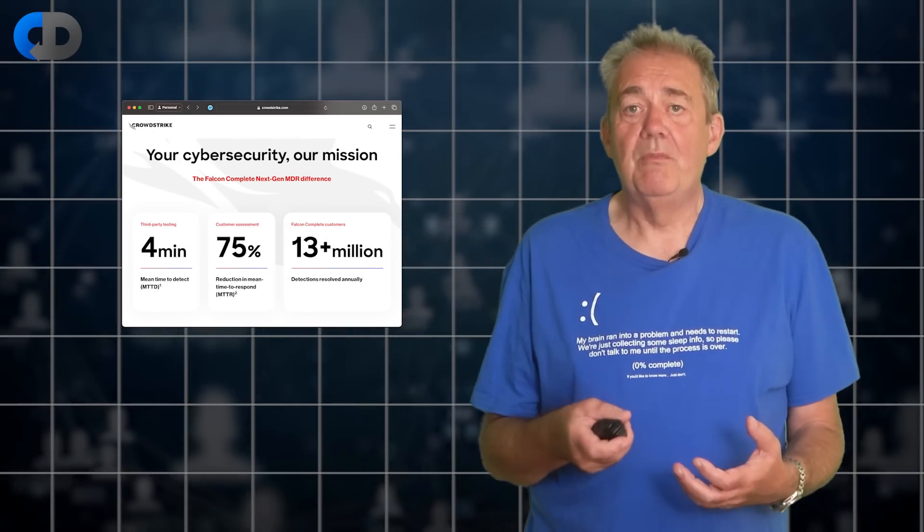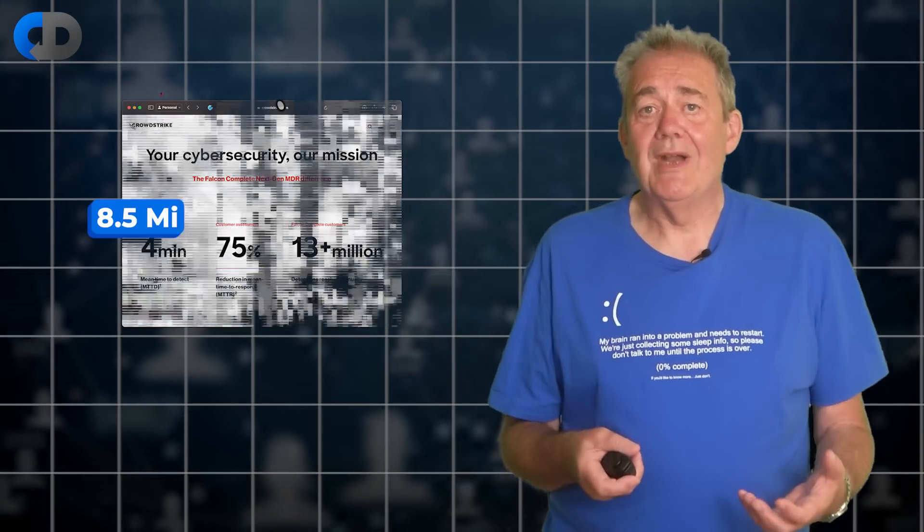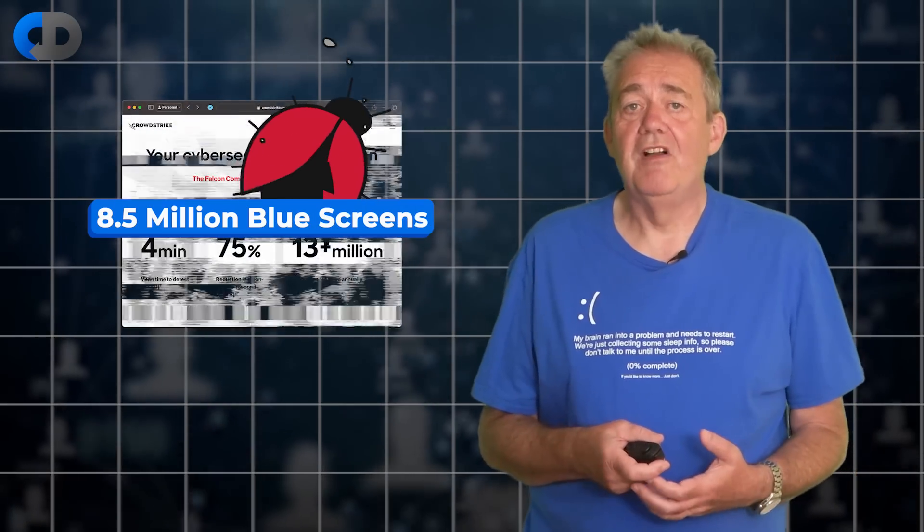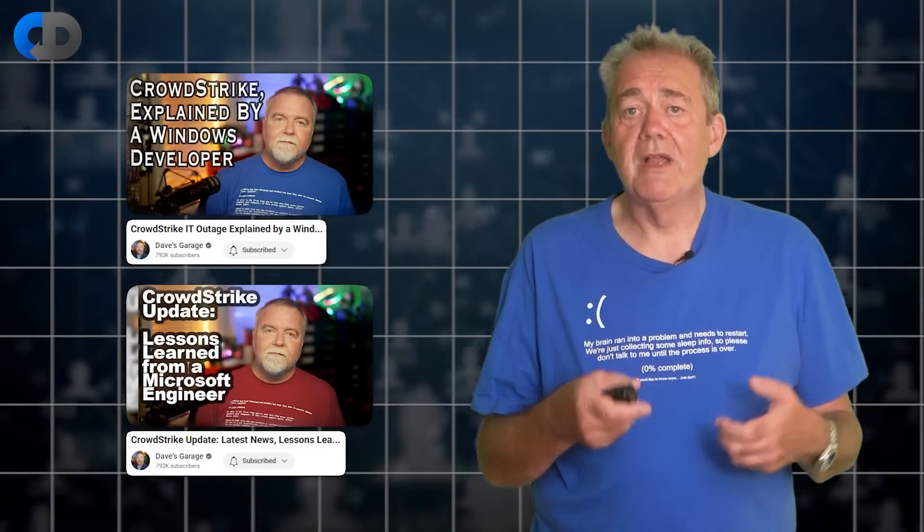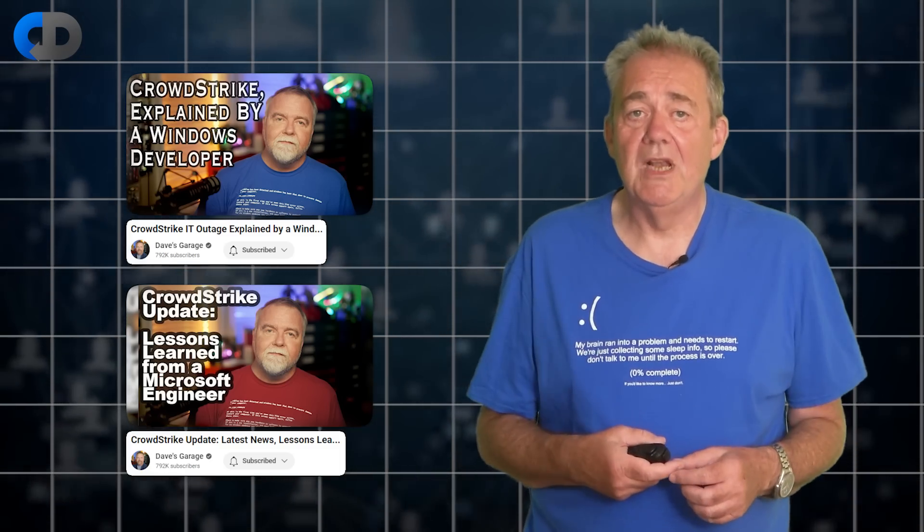The problem they introduced looked like a null pointer bug and it crashed 8.5 million Windows computers. If you're interested in more detail on how the operating system works and what operating system vendors can do to protect us from ring 0 failures, I recommend two very good videos from Dave Plummer, a former Microsoft developer who worked on this stuff and runs a very good YouTube channel. There are links in the description below.